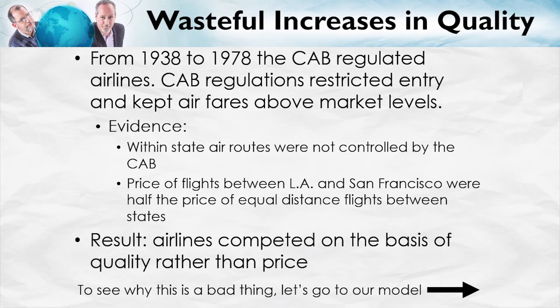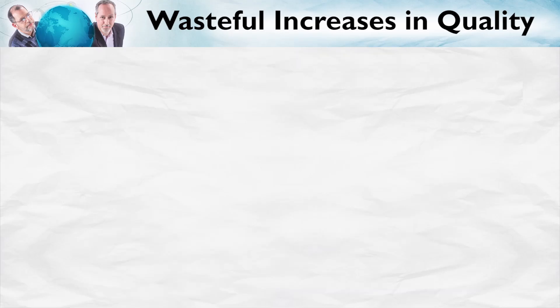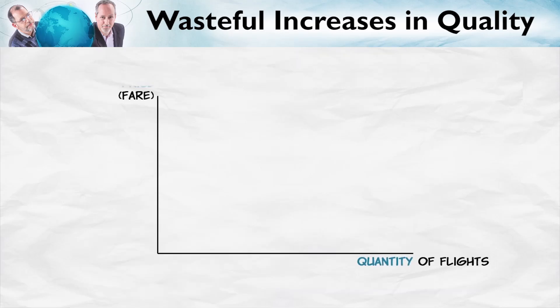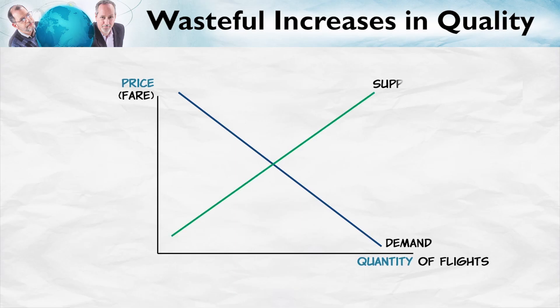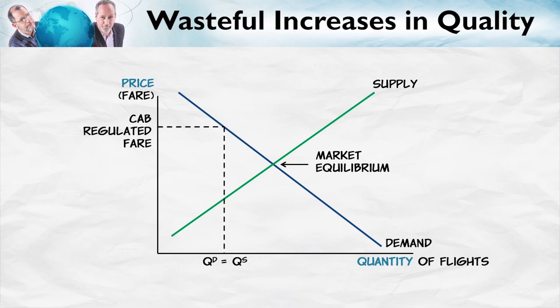Now, to see how this worked, and why this is actually a bad thing — why you can have too much quality — let's take a look at our model. Along the horizontal axis, we have the quantity of flights. Along the vertical axis, we have the price, demand, supply, market equilibrium. And here is the price floor, the CAB regulated fare.